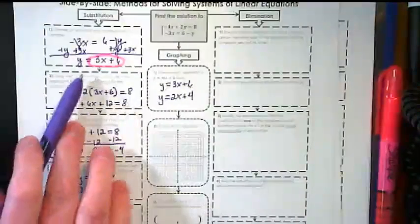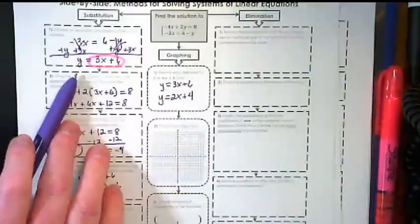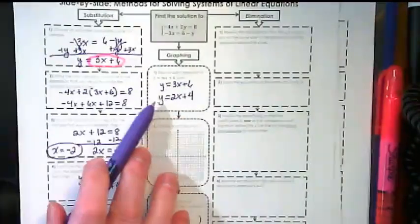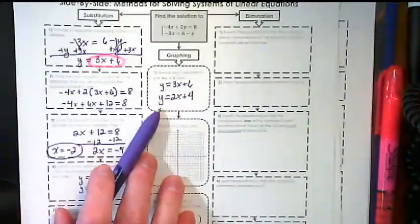So for substitution, one of these has to be solved for a variable. For graphing, both of them have to be in y equals mx plus b form.